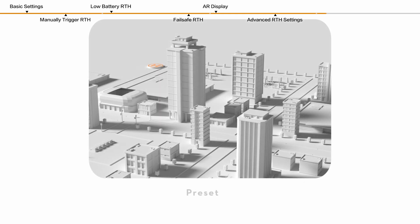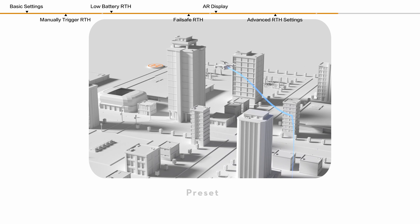If preset is selected, the aircraft will ascend to a preset altitude first, then plan the RTH path automatically and return to the home point.